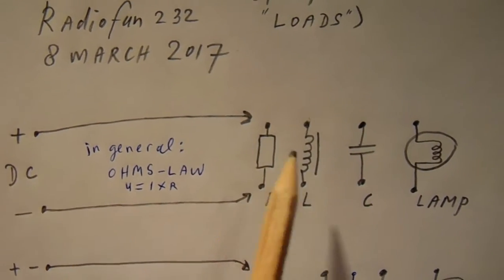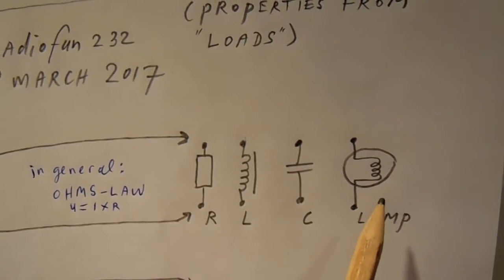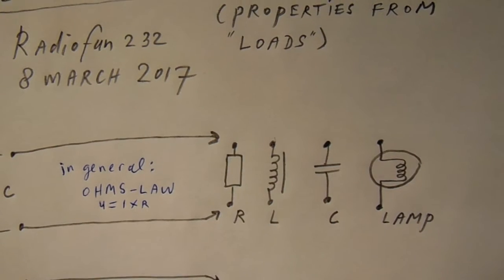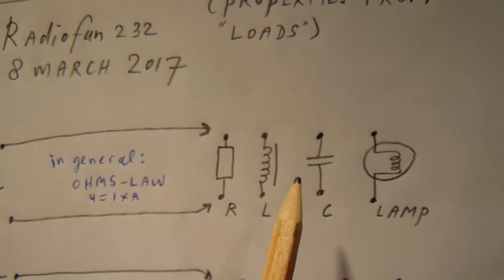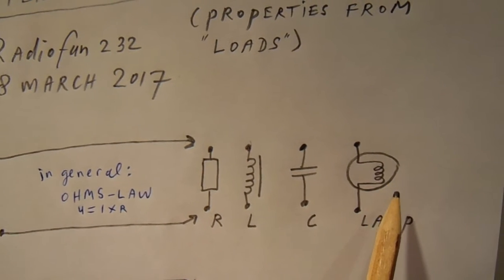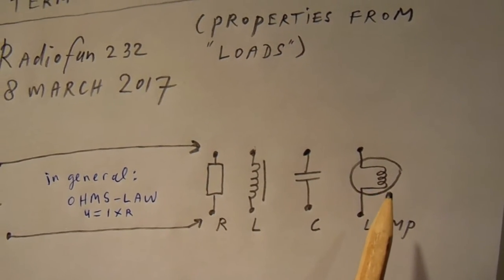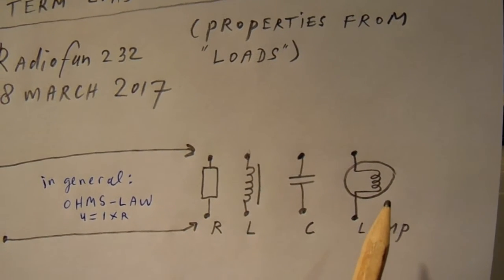When we add DC to a capacitor, the capacitor is charged to a certain value. When we add DC to a lamp, there's only one phenomenon and that is that the lamp starts to light up. The filament gets hot and the resistance from the filament changes because it gets hot.